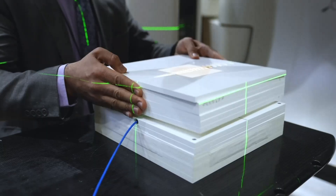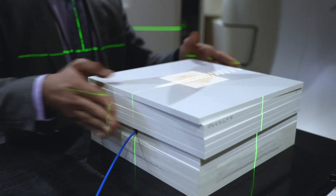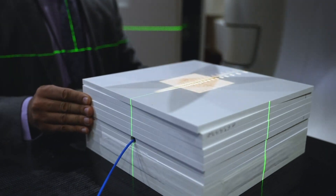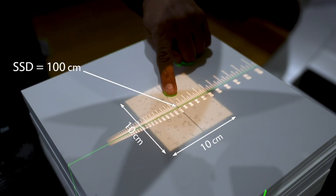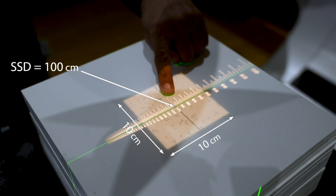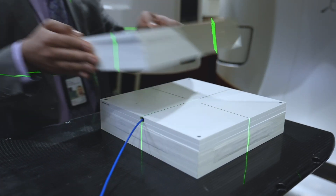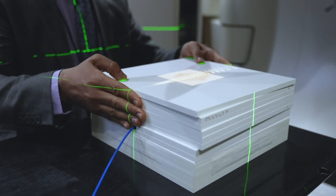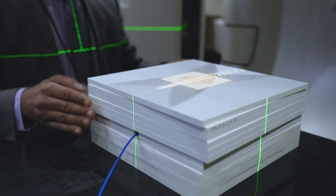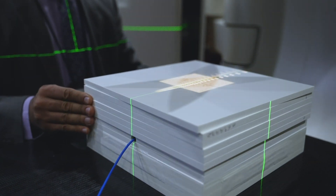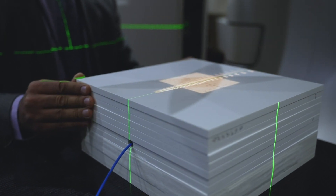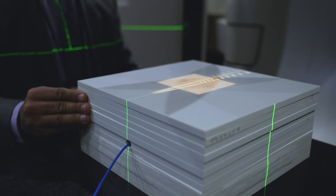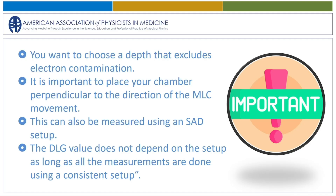To do the measurement we have to be at the reference geometry. This means we are using a 10×10 cm² field size and 100 cm SSD. For a 6 MV energy, if you have a solid water phantom that is big enough you can use a depth of 10 cm, but here we are using a 6 cm depth for this phantom. You want to choose a depth that excludes electron contamination.